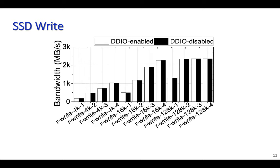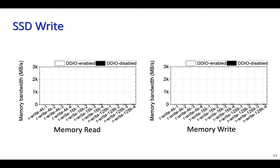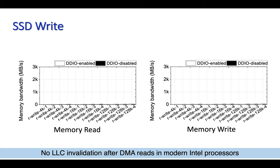Now let's look at the results when writing to SSD. Again, in terms of write bandwidths, there is no difference between DDIO-enabled or disabled modes, because the memory bandwidth is not the bottleneck in the storage stack. However, surprisingly, we also see no difference in memory bandwidth utilization when writing to SSD with DDIO enabled or disabled. After digging into this, we found out that Xeon processors newer than Sandy Bridge do not evict I/O buffers after DMA reads, regardless of the DDIO configuration.